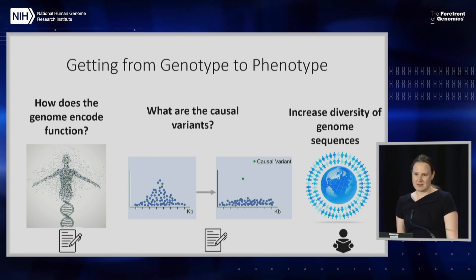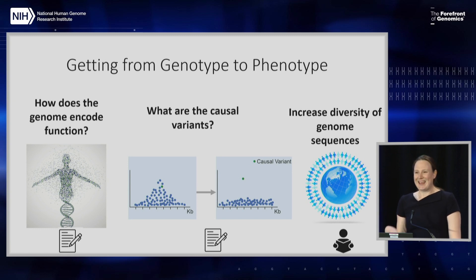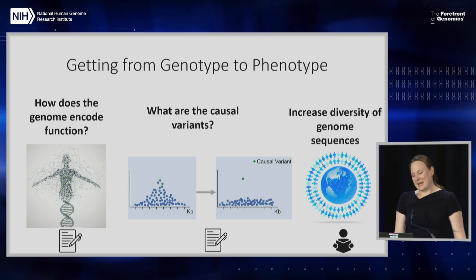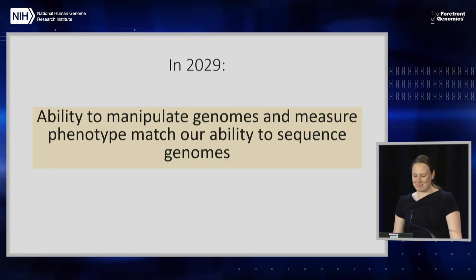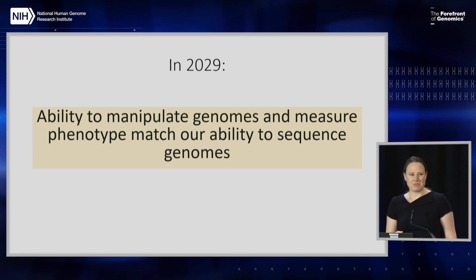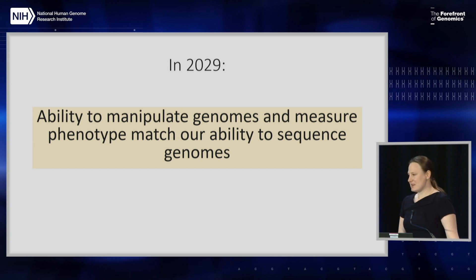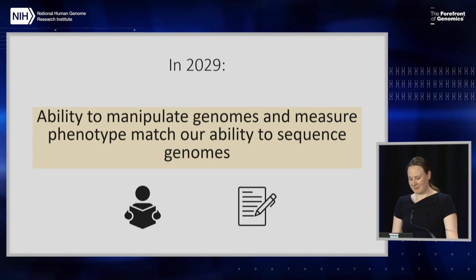If we want to understand how genomes encode function and where the causal variants are, we need to take a new approach. We really need to be reading genomes and manipulating genomes, rather than just reading them. In my dream world, in 2029, we'll be able to manipulate genomes and measure phenotypes with the same ability that we can sequence genomes — going from just reading to reading and writing with equal ability.